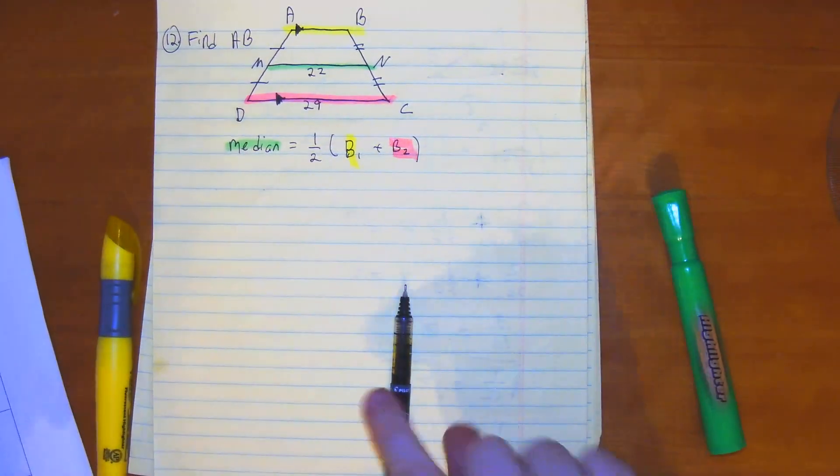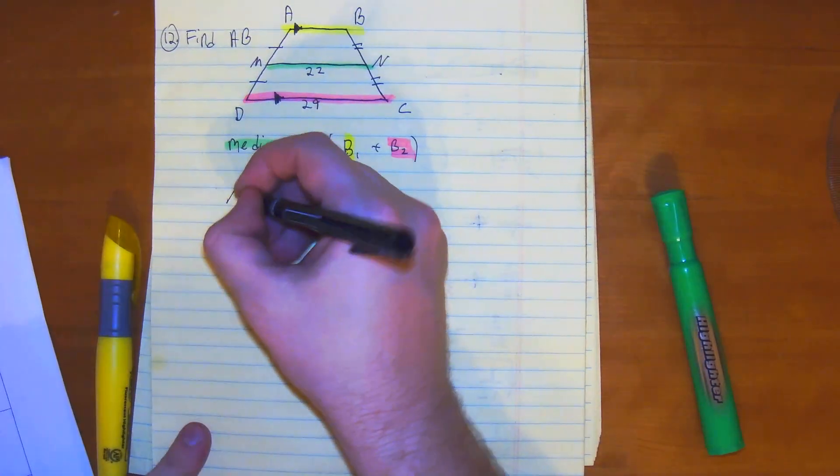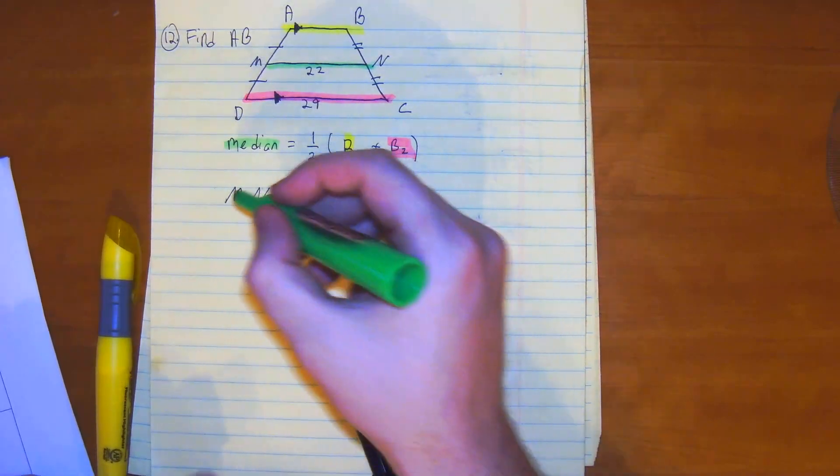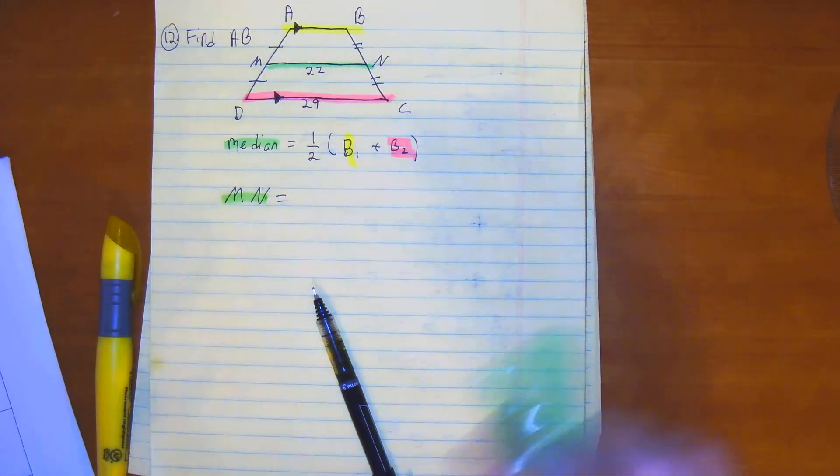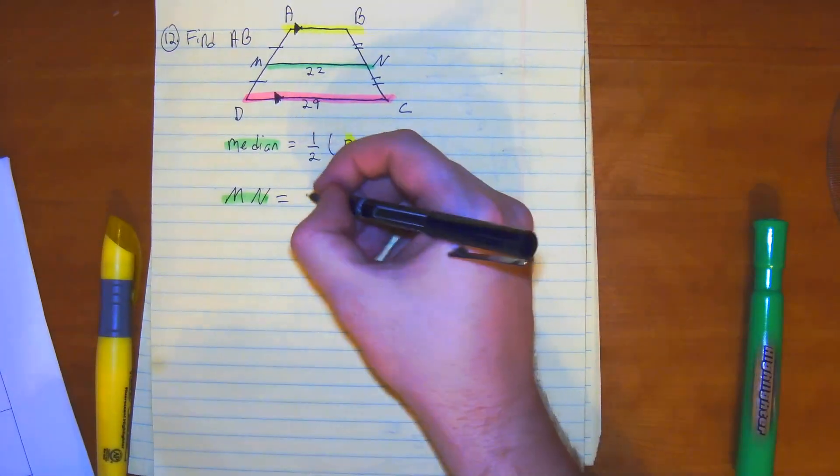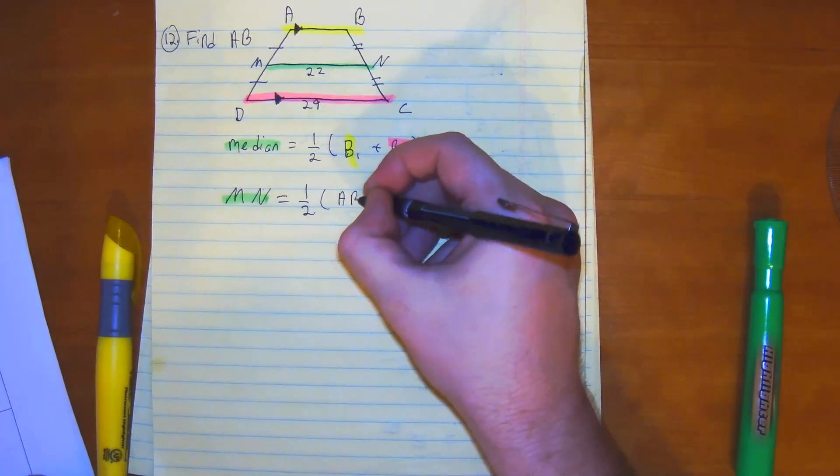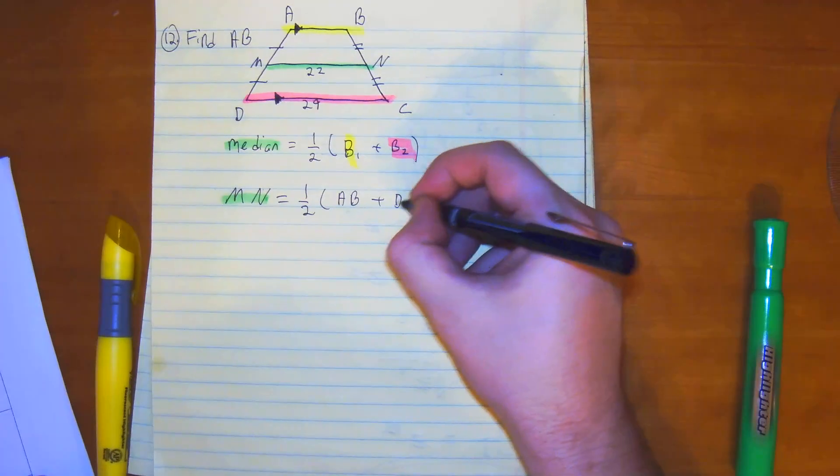Just to see it with the letters now, we have MN is the median. Then we have one-half of base 1 would be AB plus DC.